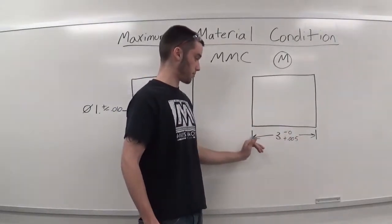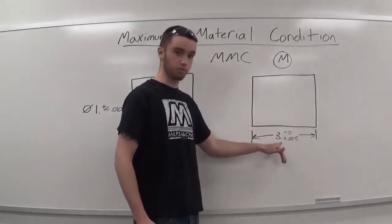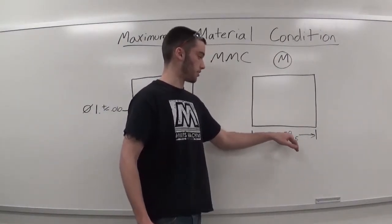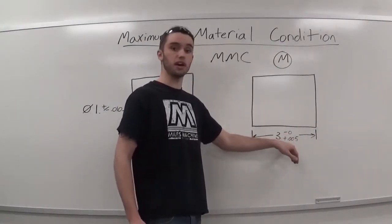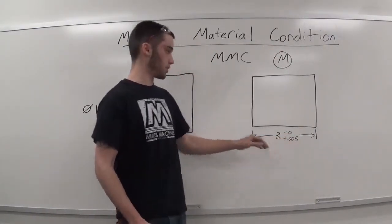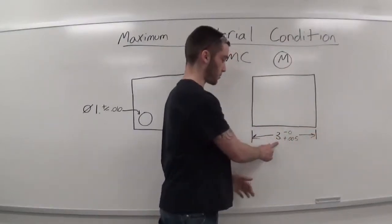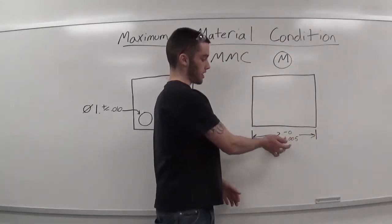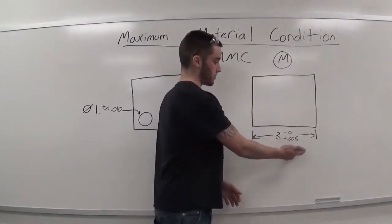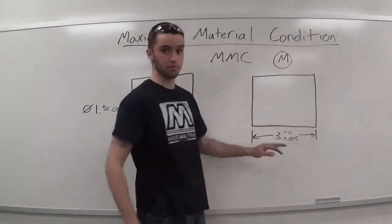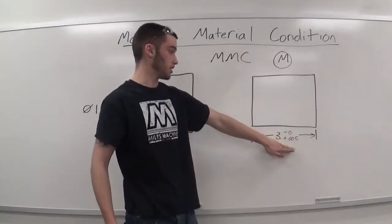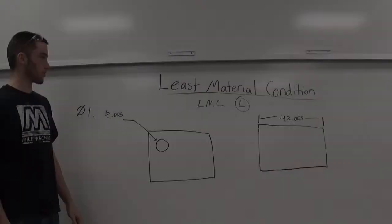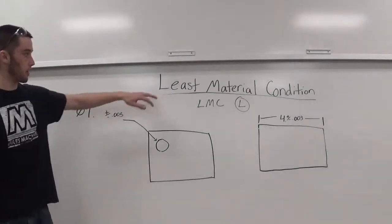Now I have a length here on this blueprint from here to here — three inches with a tolerance of minus zero plus five thou. In order to get the most material, we want this number to be the biggest, so we make it three inches and five thou, giving us the most material while staying within our tolerance.